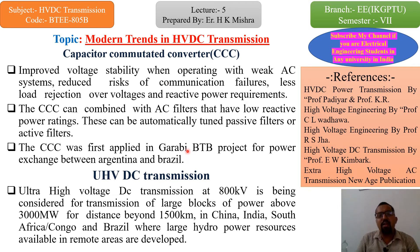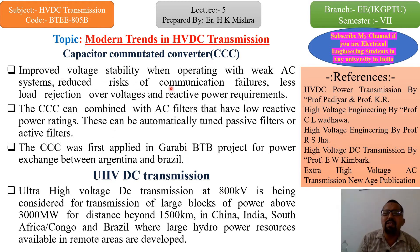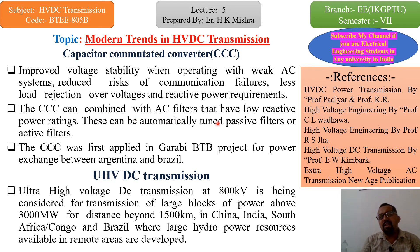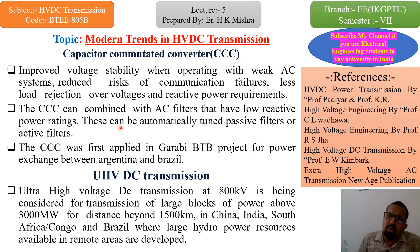Next is Capacitor Commutated Converter (CCC), जिसे हम generally Triple-C से भी जानते हैं। इसमें improved voltage stability when operating with weak AC systems, reduced risk of commutation failure, less load rejection overvoltage, and reduced reactive power requirement होता है। The CCC combined with AC filters has low reactive power rating — these can be automatically tuned passive filters or active filters। यह capacitor commutated converter automatically tuned हो जाता है passive filter और active filter में as per the requirement of the transmission line and substation।